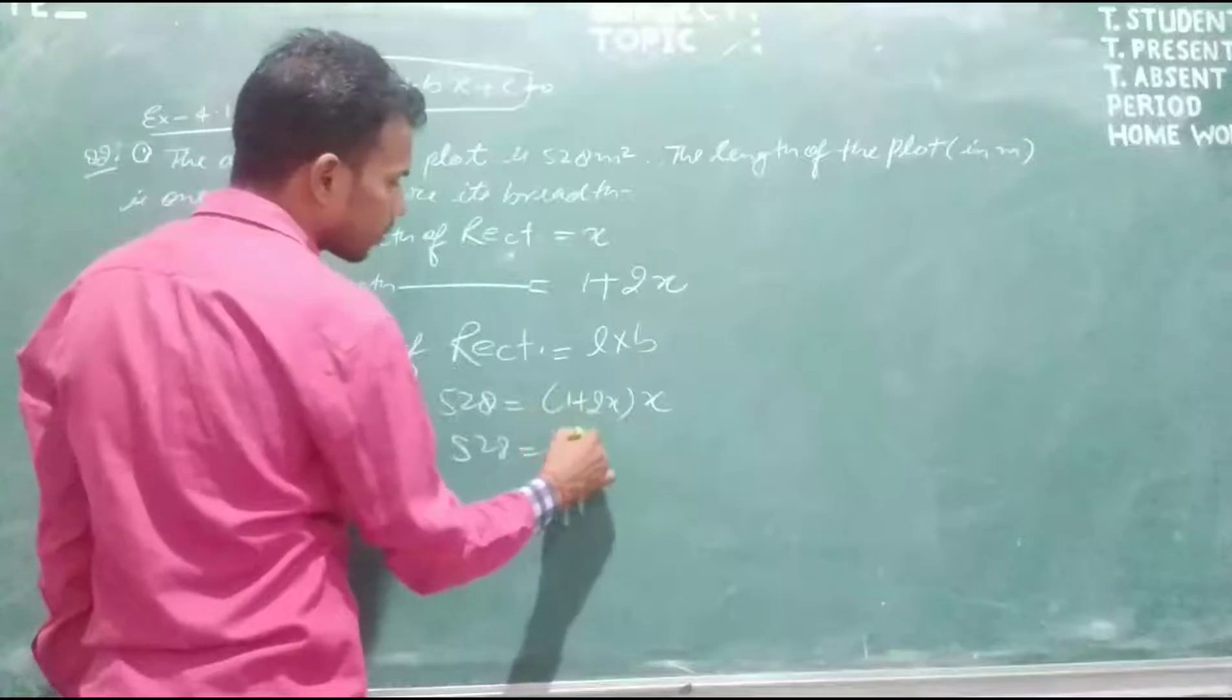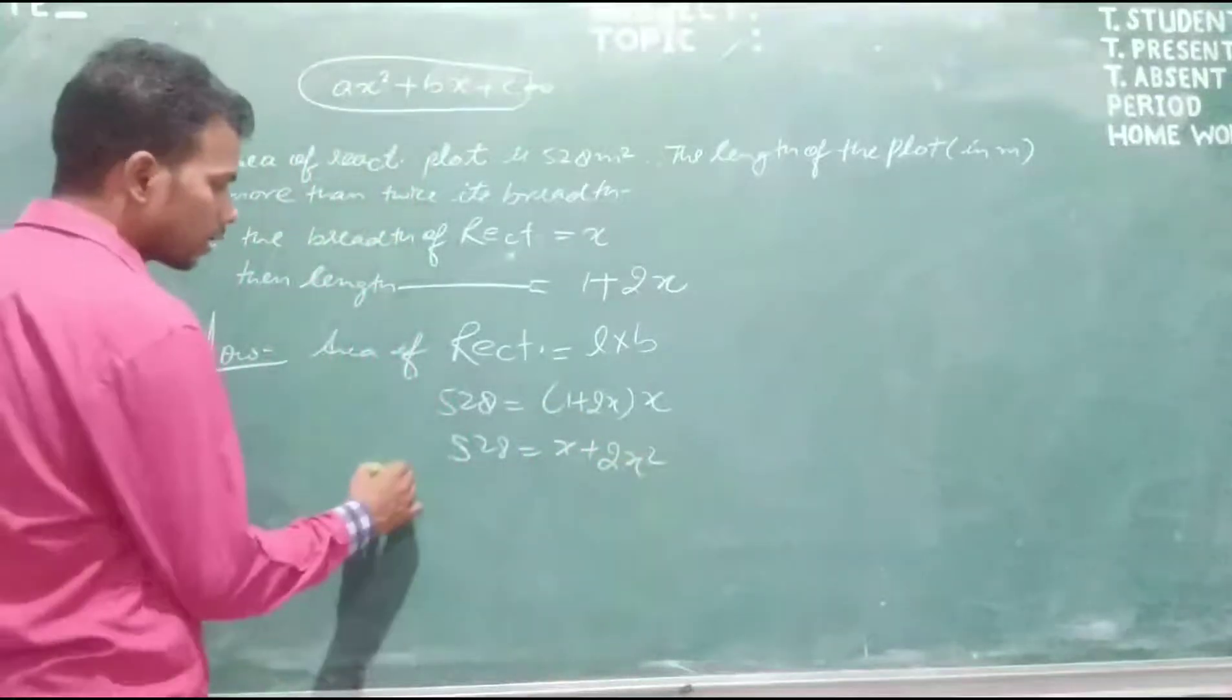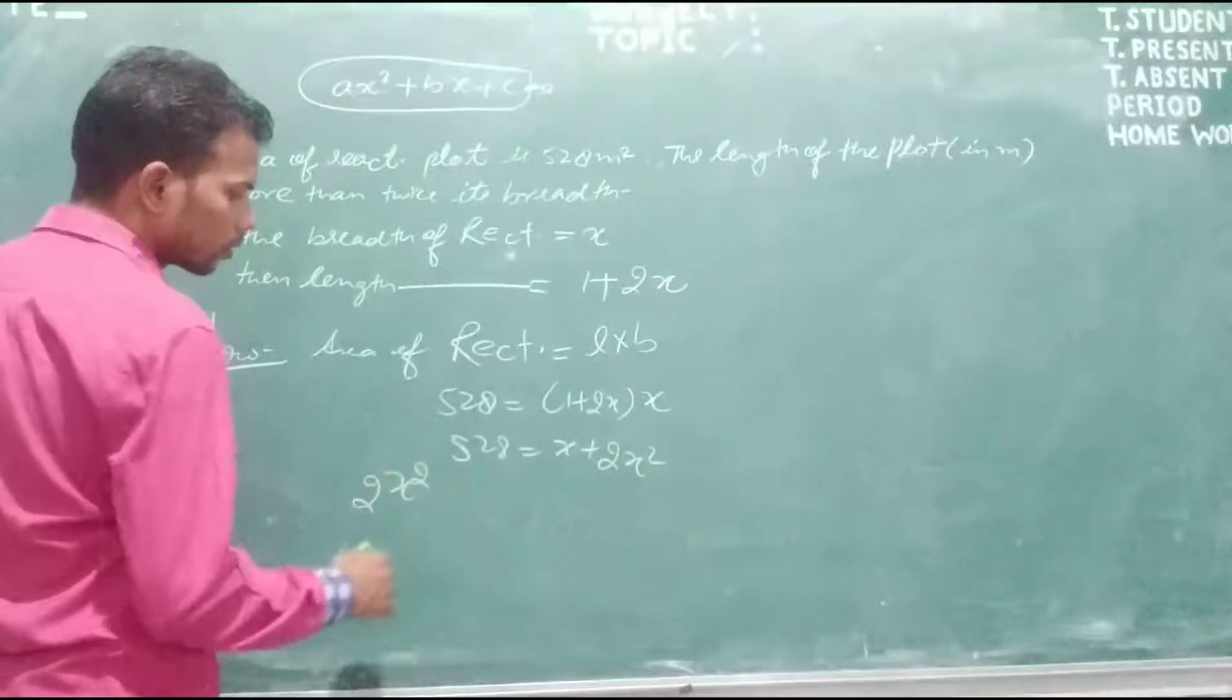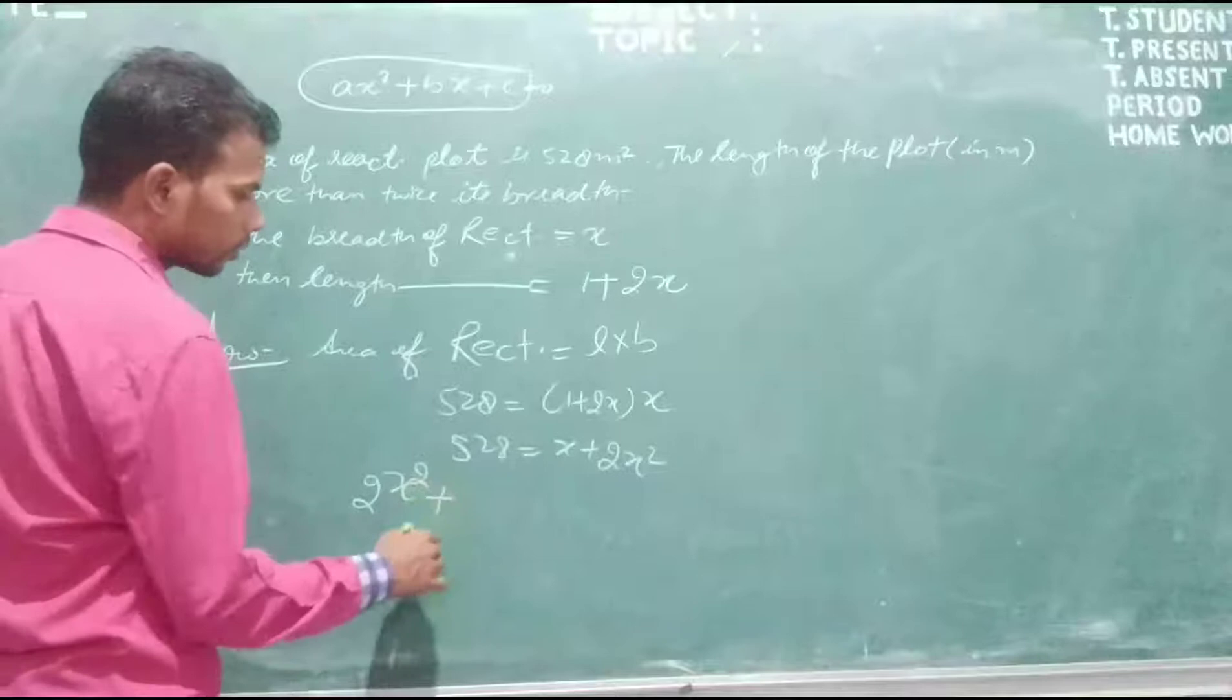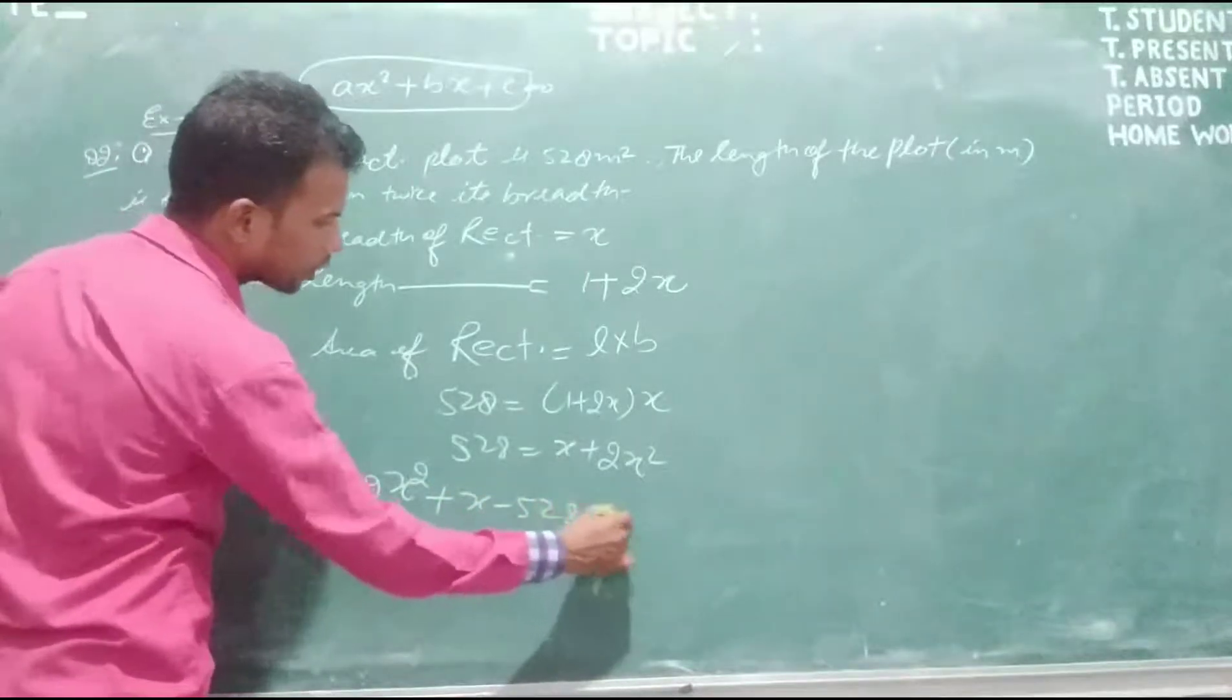X times 1 plus 2X gives X plus 2X square. So, the quadratic equation is 2X square plus X minus 528 equal to 0.